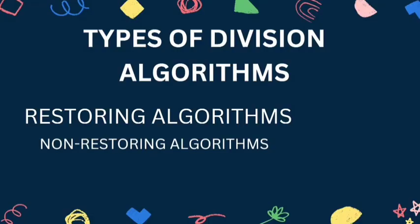Hello everyone, I am Tilak Chahan from S Division, roll number 39. I am going to explain the types of division algorithm. First is Restoring Algorithm. In the division algorithm there is a quotient and a remainder when we divide two numbers. The N-bit dividend is loaded in Q and divisor is loaded in M. The value of register A is initially kept zero, and this is the register whose value is restored during iteration, due to which it is named Restoring.